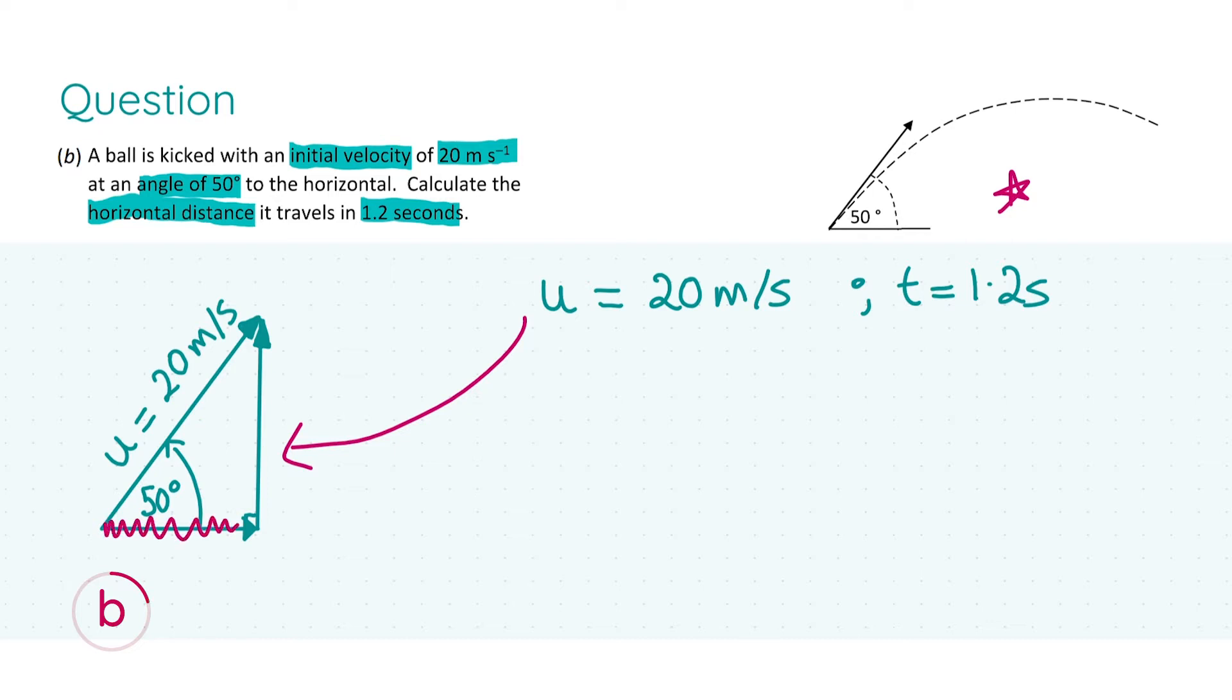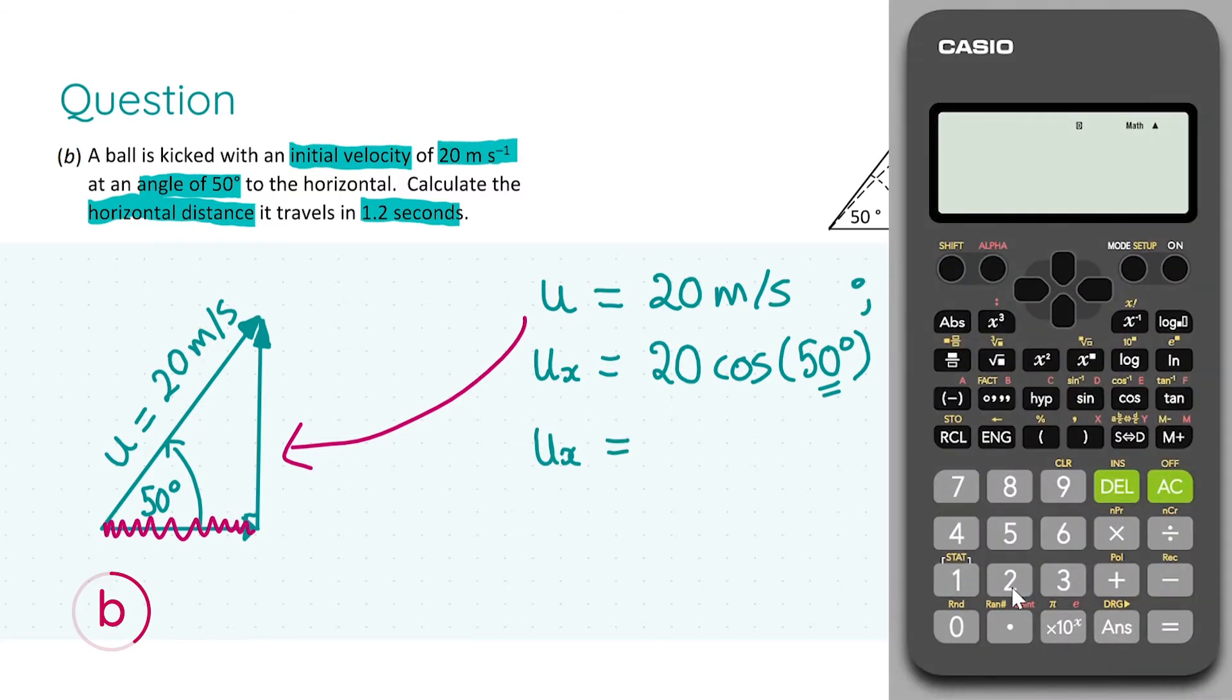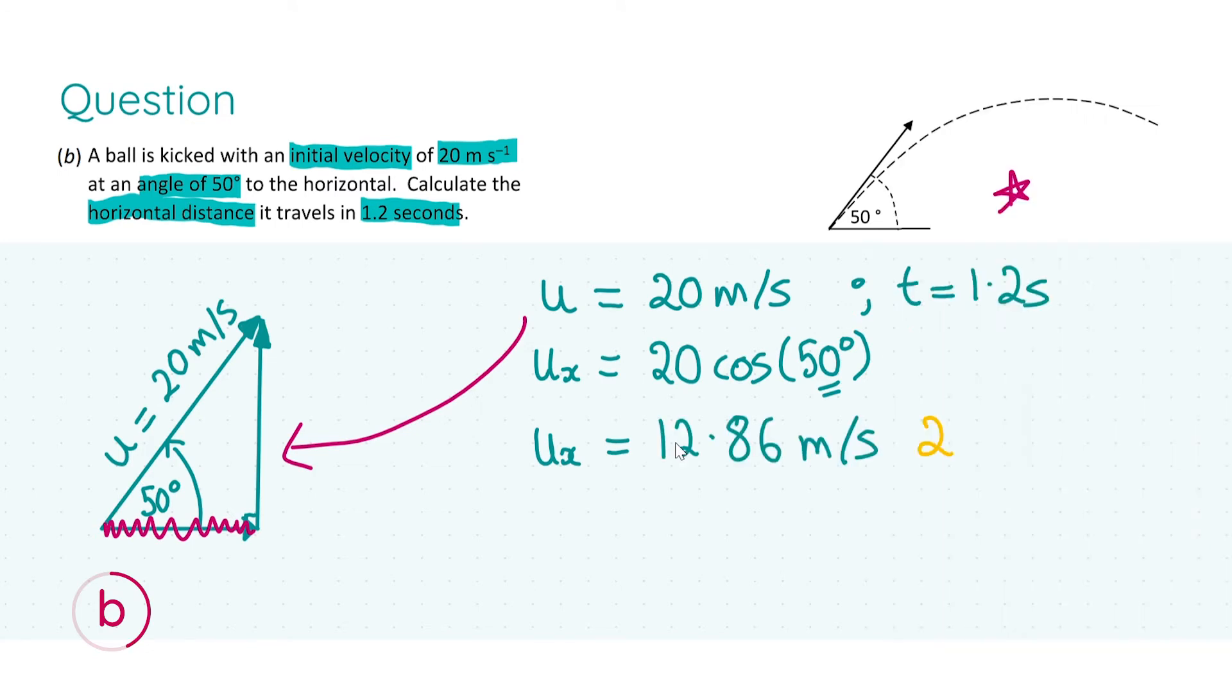We're looking at the horizontal velocity which is this red squiggle on the triangle and represents the adjacent of this velocity triangle. Through trigonometric identities we know that the horizontal speed equals 20, the hypotenuse, times the cosine of the angle. Make sure your calculator is in degrees mode. Evaluating this gives us a horizontal velocity of 12.86 meters per second, giving us two marks.